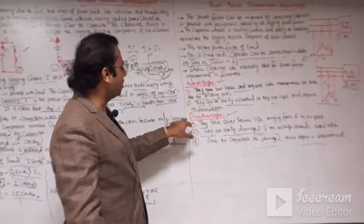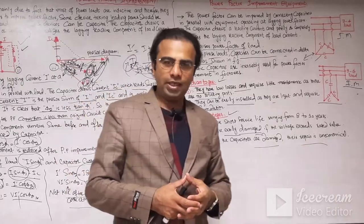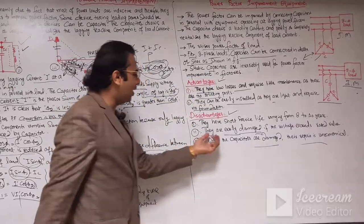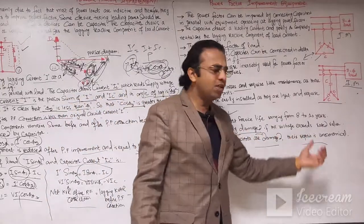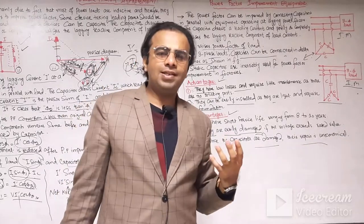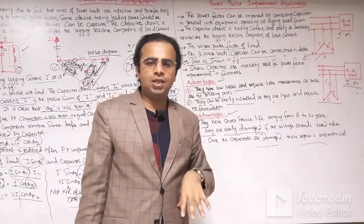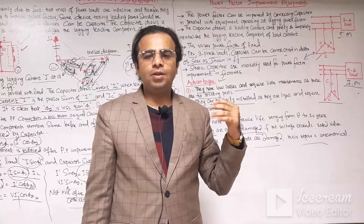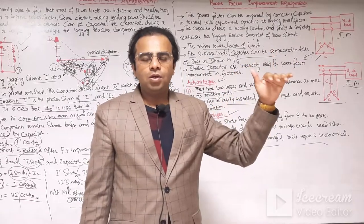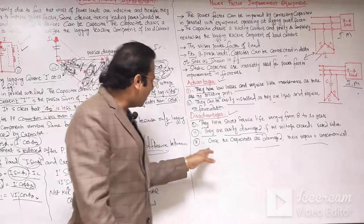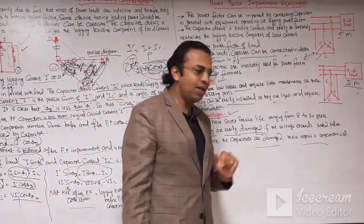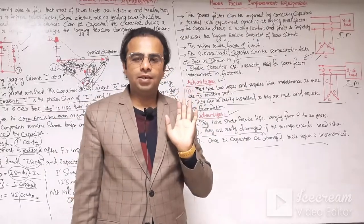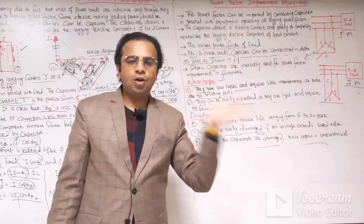The disadvantages of the static capacitor are: first, they have a short service life of 8 to 10 years. Second, they are easily damaged if the voltage exceeds the rated value — if an over-voltage condition occurs in the power system due to any abnormal condition, the capacitor can be easily damaged beyond the prescribed nominal value given by the manufacturer. Third, once capacitors are damaged, their repair is uneconomical and replacement is the only option.